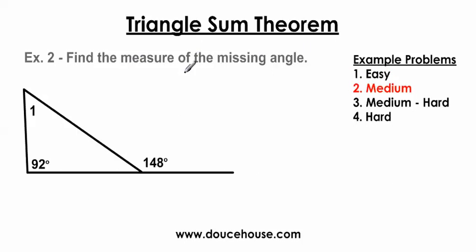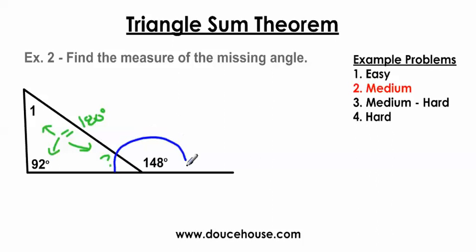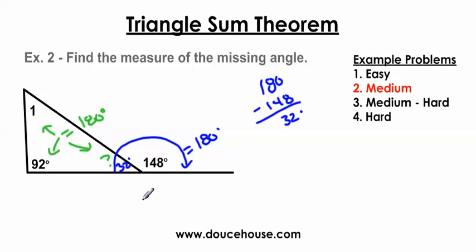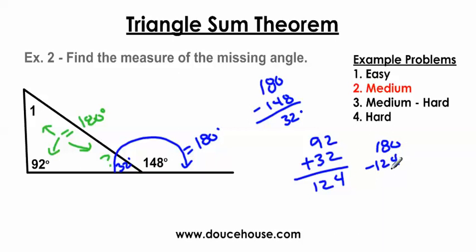Find the measure of the missing angle. Notice this is a little different — we're not given one of the angles directly. All three angles need to equal 180 degrees, but I don't know what that angle is right now. I need to use information from earlier classes — we have a linear pair. These two angles equal 180 degrees. So 180 minus 148 gives me 32 degrees. Now I can add 92 plus 32, which is 124, then take 180 minus 124 and end up with 56 degrees. The measure of angle 1 is 56 degrees.